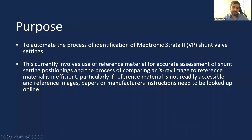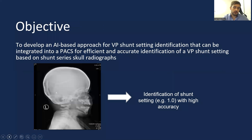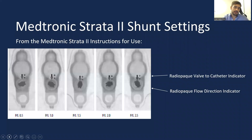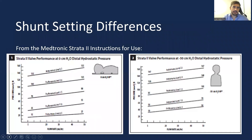Instead of searching for an online reference while reading a study with a VP shunt, the goal of our study was to train a neural network to automatically identify shunt valve position for metatronic strata 2 VP shunts. This is a visual comparison of the different VP shunt valve settings, and these diagrams show how shunt valve position impacts VP shunt function.